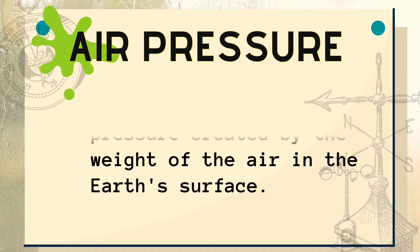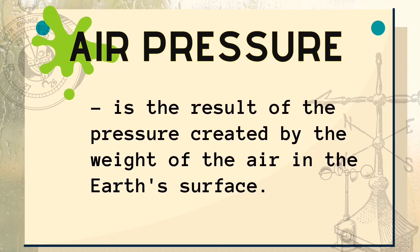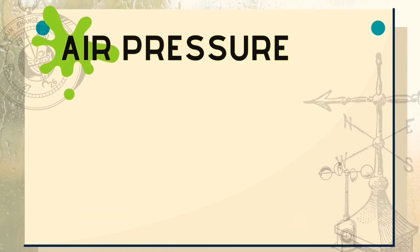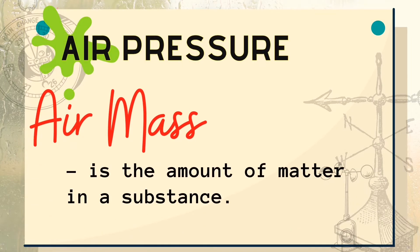Air pressure is the result of the pressure created by the weight of air on the earth's surface. Air has mass, also called air mass. Air mass is the amount of matter in a substance. The air around you pushes down with the mass of 1 kilogram per square centimeter. You do not notice the air pressure because the pressure inside your body is equal to the pressure of the air outside. Air pressure varies at different altitudes because the density of air in the atmosphere decreases with elevation.